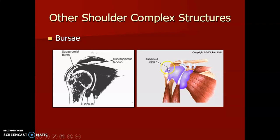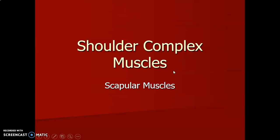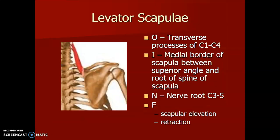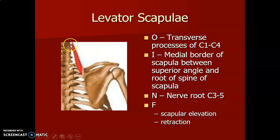Moving to the muscles in the shoulder joint complex. The levator scapulae originates from C1 to C4 and inserts onto the medial border of the scapula. It is innervated by nerve roots C3 to C5 and causes elevation of the scapula as well as its rotation.